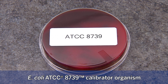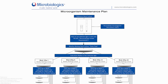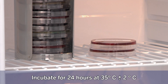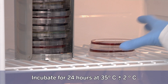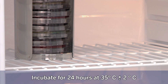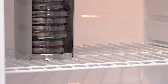E. coli ATCC 8739 is used as the calibration strain. Reconstitute a purchased stock strain according to the manufacturer's directions. As an example, the Microbiologics package insert details a microorganism maintenance plan. A stock culture plate is inoculated from the reference stock using trypticae soy agar with 5% sheep blood or Columbia agar with 5% sheep blood. This stock plate is incubated for 24 hours at 35 degrees Celsius plus or minus 2 degrees Celsius, and will be used for subculture for 4 weeks, after which it is discarded and a new stock plate is made from another reference stock culture.